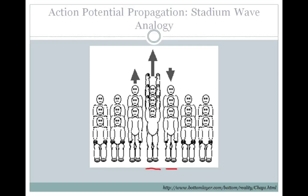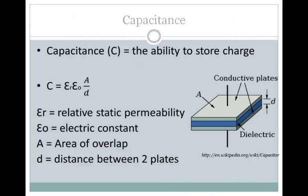The action potential propagation speed or conduction velocity can be determined mathematically. Before we get to the equation, I want to go over a few quick things. Capacitance, or C, is the ability to store or separate charge.